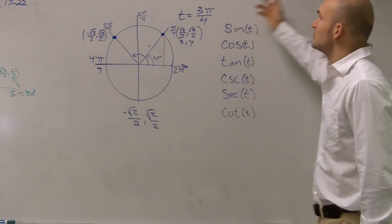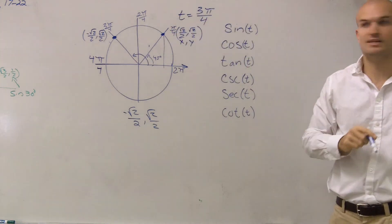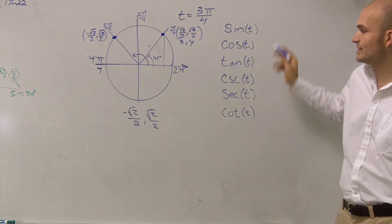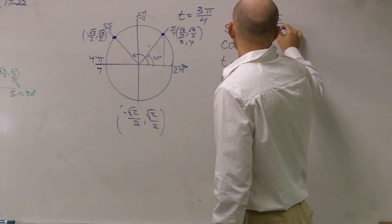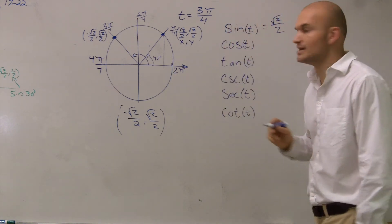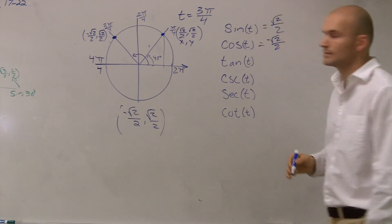So if you guys look up here, remember sine of my t tells me to find what is the y coordinate. So sine of t, what is the y coordinate for this? It's going to be √2/2. Cosine is the x coordinate. Negative √2/2. Right?